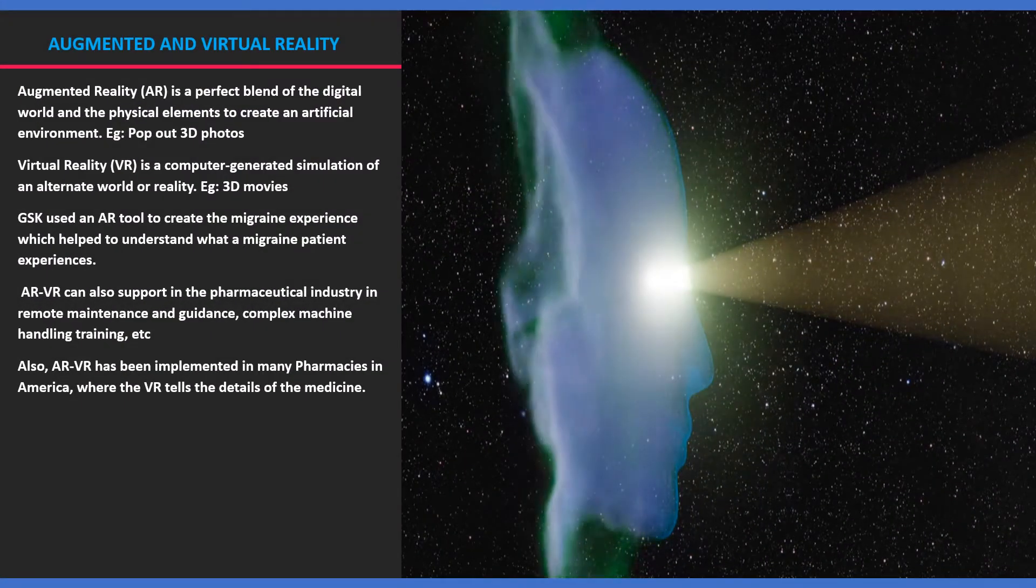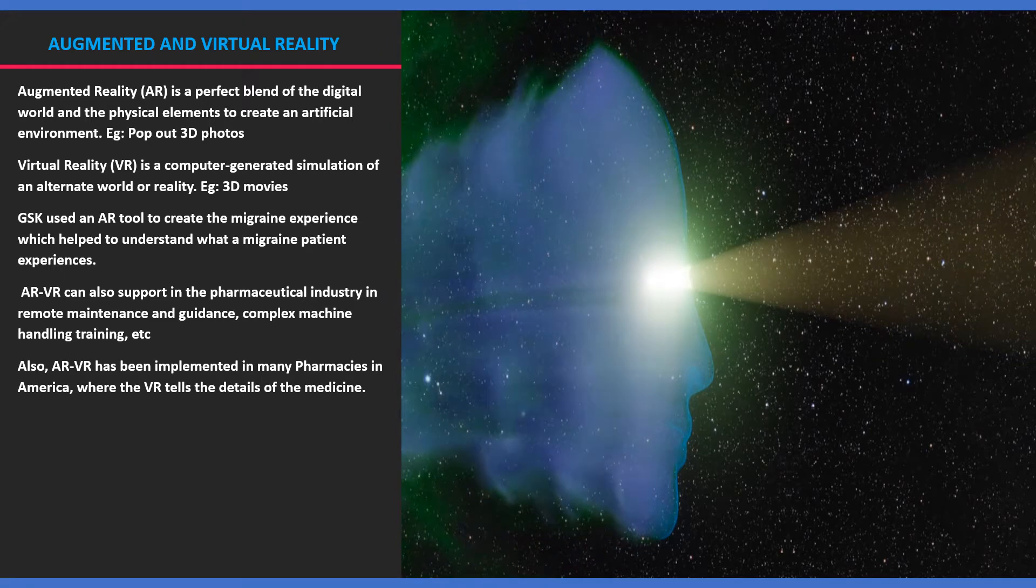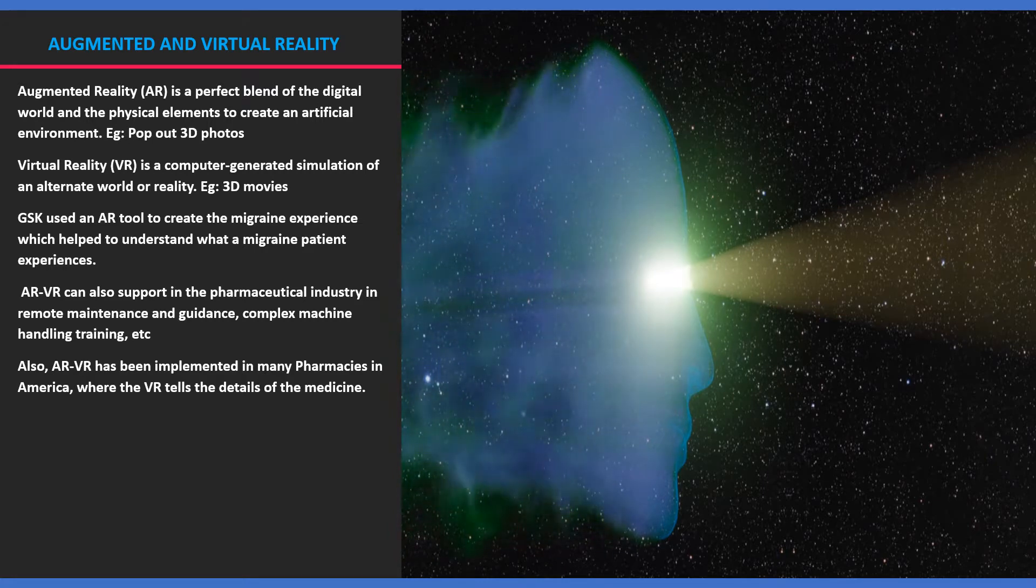Augmented reality is a perfect blend of the digital world and the physical elements to create an artificial environment. For example, pop-out 3D photos. Virtual reality is a computer-generated simulation of an alternate world or reality. For example, third movies.